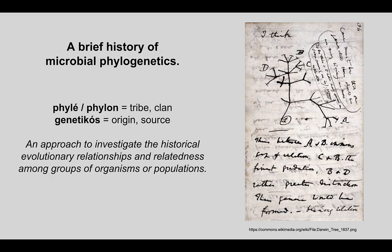Now, what do we call this field of research? Phylogenetics. If you break down the word phylogenetics, we're talking about 'phylon' or phyla — groups of things, whether they be tribes, clans, or organisms. So it's a collection of things, particularly in a population, and 'geneticus', which is the origin or source of those groups of organisms. So we're interested in the history of these groups over time.